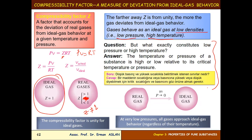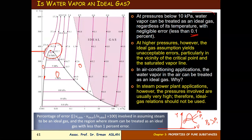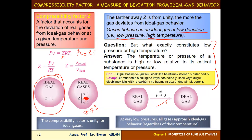At very low pressures — as pressure approaches zero — all gases approach ideal gas behavior regardless of their temperature. Also, at pressures below 10 kilopascal, water vapor can be treated as an ideal gas irrespective of its temperature. When pressure goes to zero, all gases behave like an ideal gas regardless of temperature.